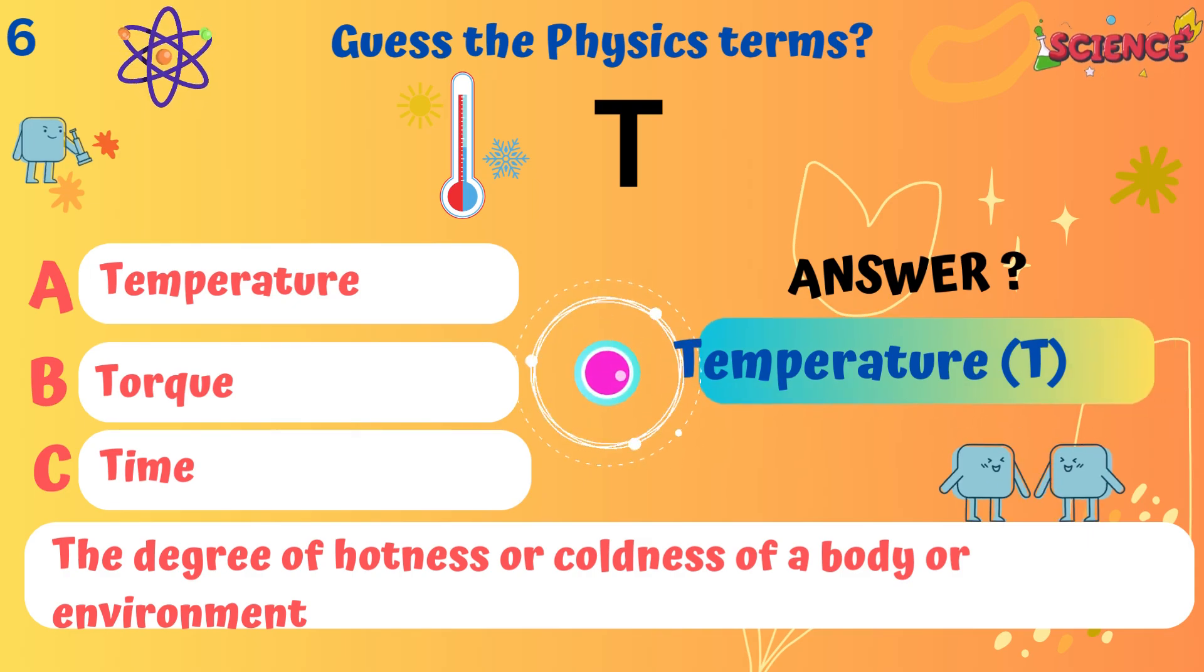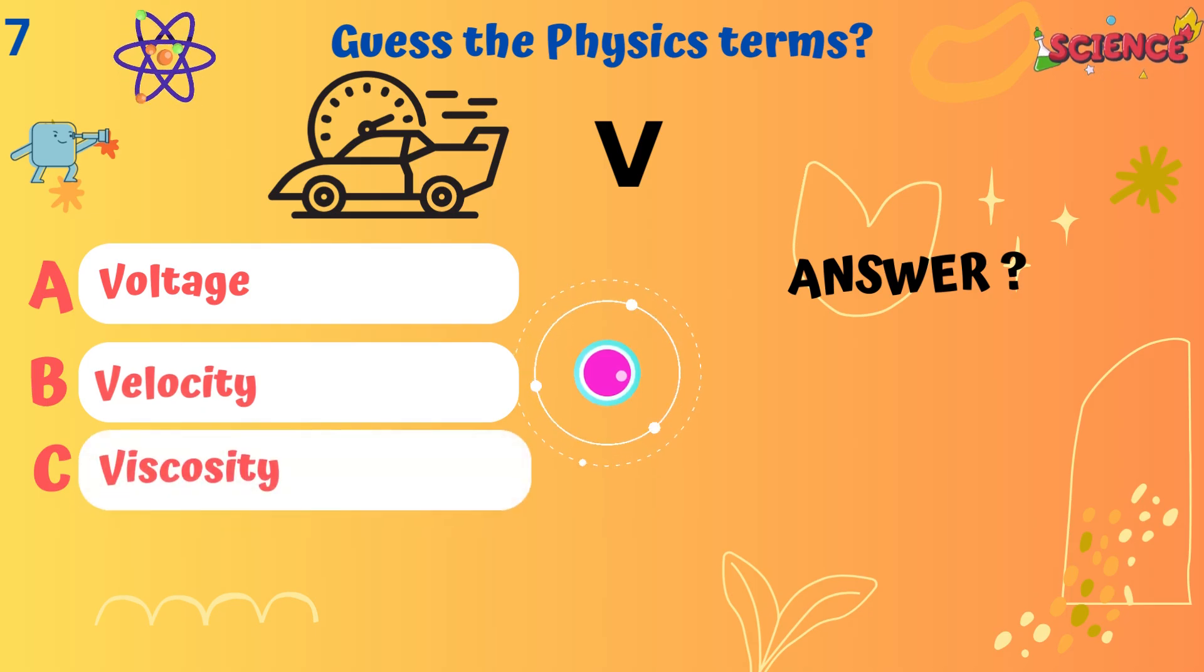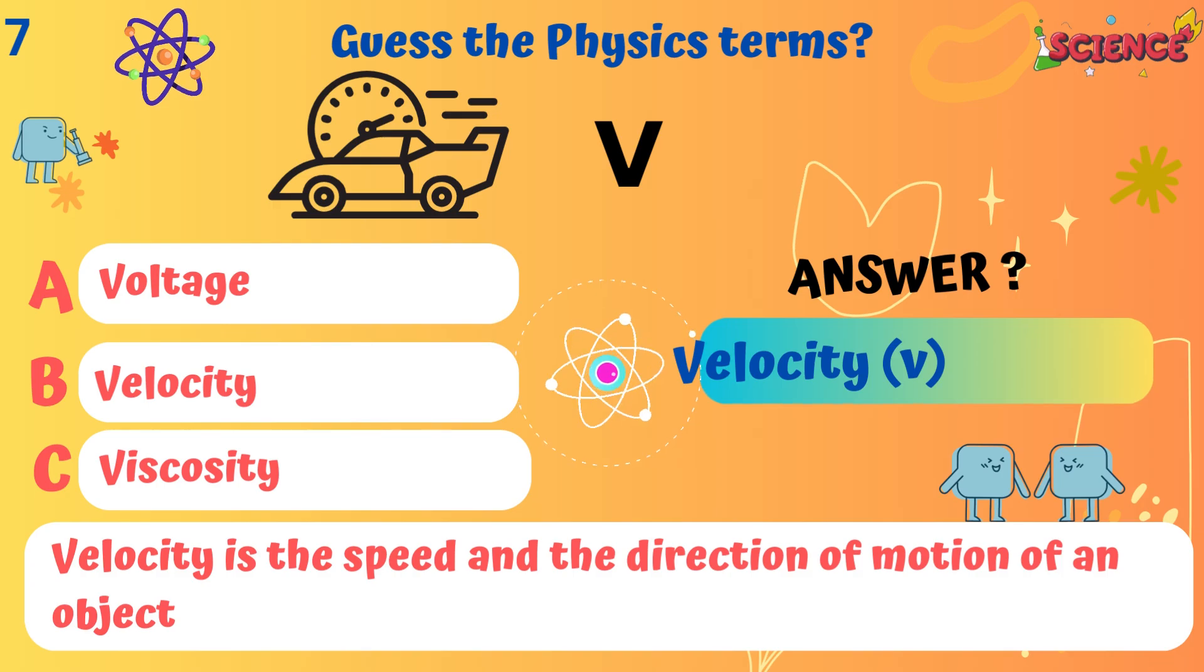Temperature. The degree of hotness or coldness of a body or environment. Velocity. Velocity is the speed and the direction of motion of an object.